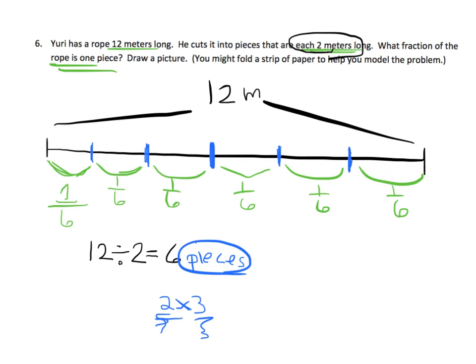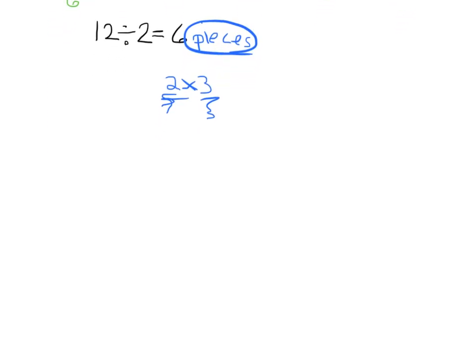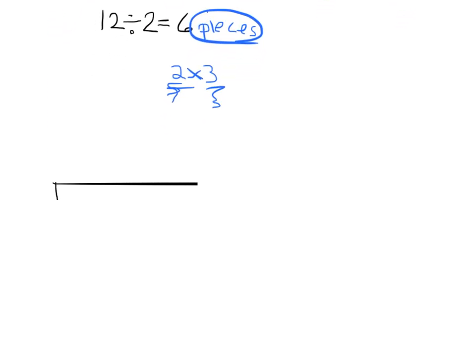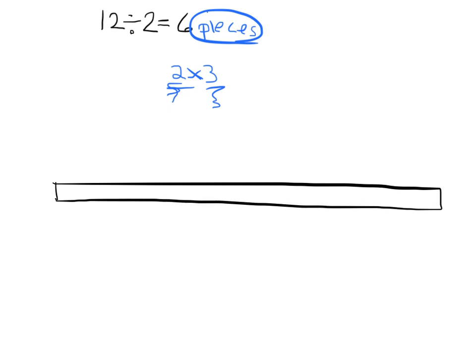Parents and teachers, help students understand that when cutting a rope or line into fractions, we count the intervals — not the vertical cut marks. Count the slices, the intervals. Also, instead of drawing a line, draw a really skinny rope — a rectangle — then cut it into two pieces and then cut each of those into three pieces.